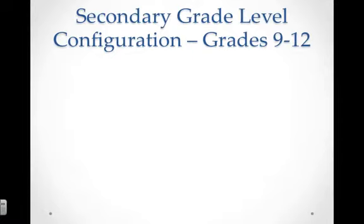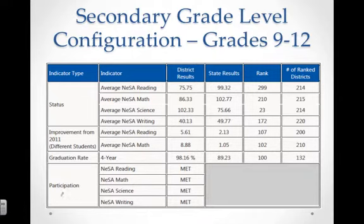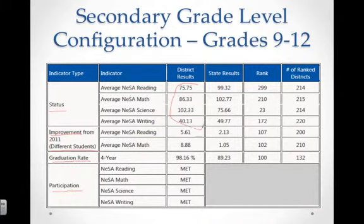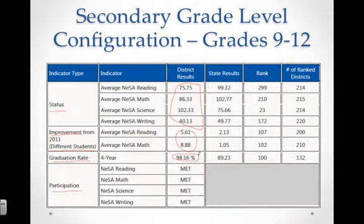The secondary grade level configuration covers grades 9 through 12. As an example, you have indicator types including status, improvement — which is different students — graduation rate, and participation. These are the district results using this data, though this is not Blair's actual data. This shows what the charts would look like, with average NISA scores in each area. Average NISA reading and math are shown for improvement. The graduation rate in this example would be 98.16%, and the participation rate met this criteria.